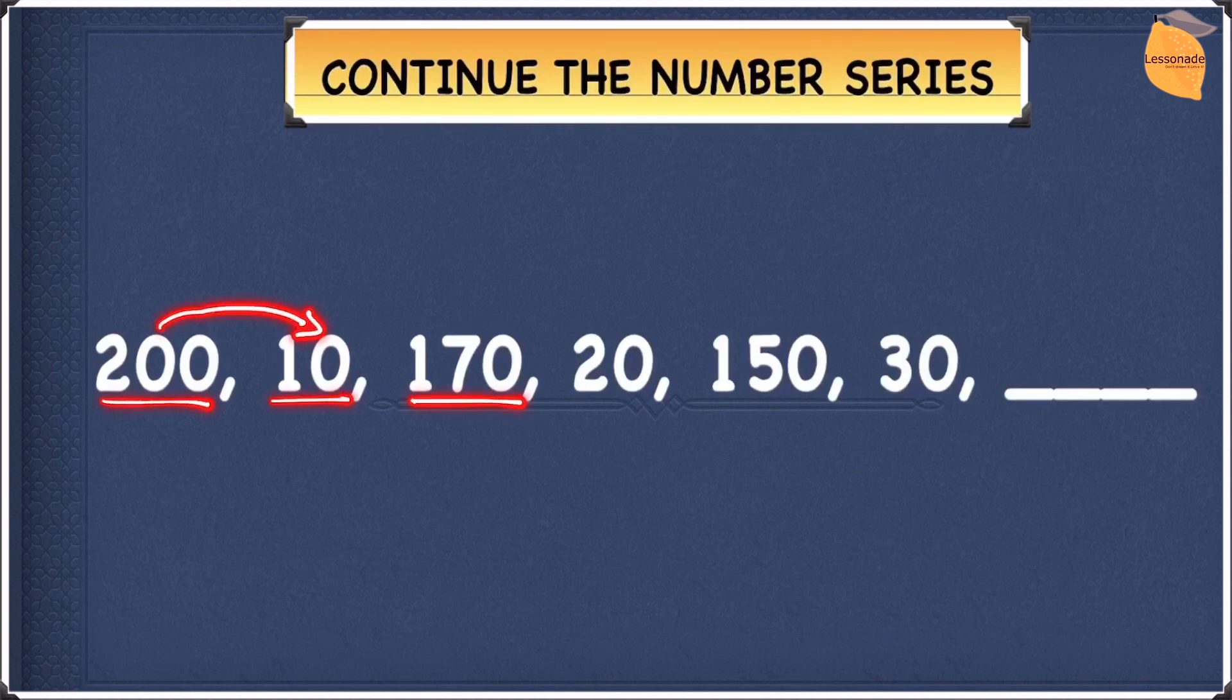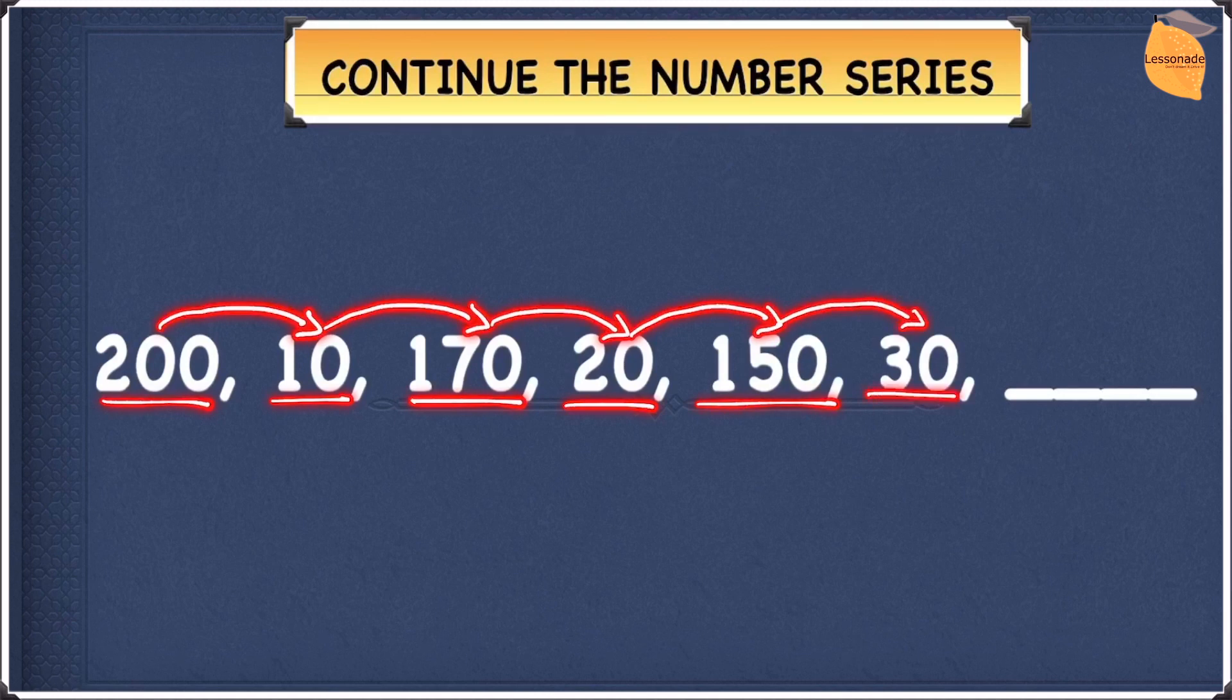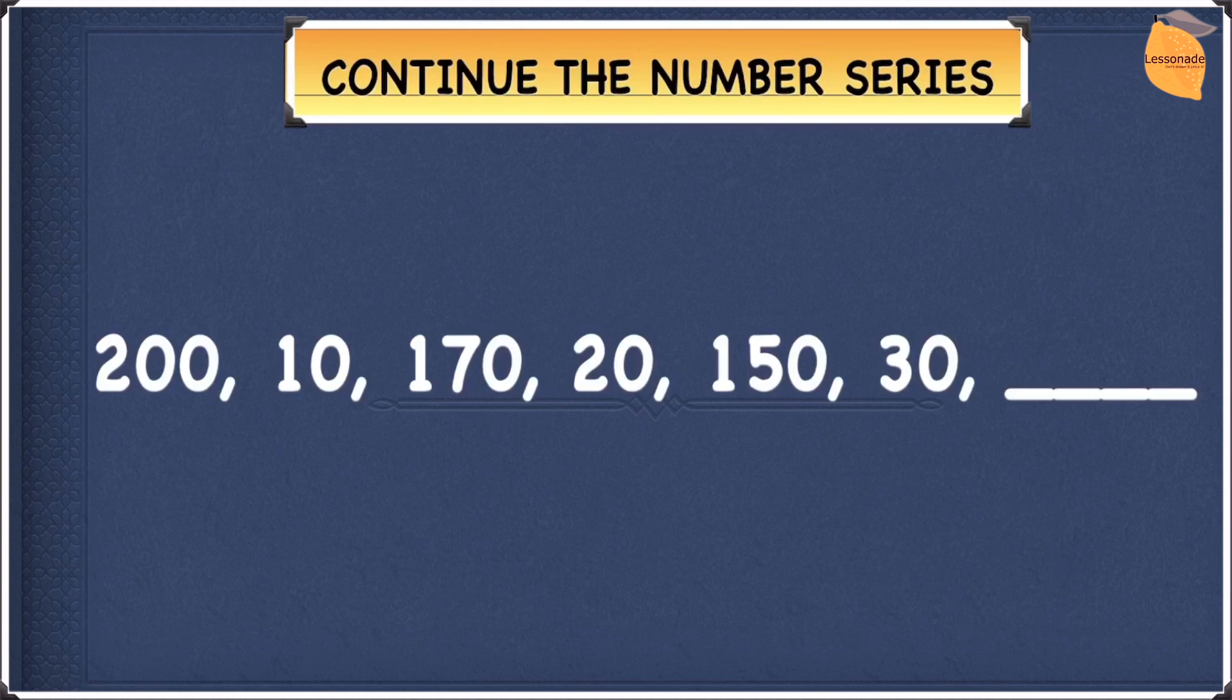From 170 you go down to 20, from 20 you once again go up to 150, and then suddenly you go down to 30. If you see this sequence, it goes up and down randomly. So this can't be right. Instead, there must be two different sequences.